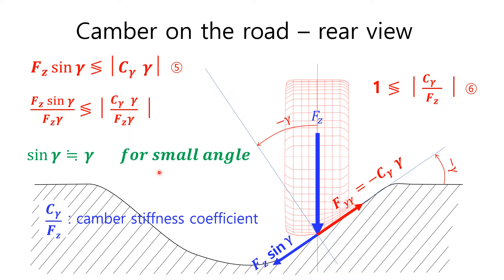The direction of net resultant force can be one direction or the other, depending on the magnitude of the camber stiffness coefficient.